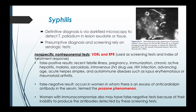When using non-specific non-treponemal tests, false positive results may occur in patients with recent febrile illness, pregnancy, immunization, chronic active hepatitis, malaria, sarcoidosis, IV drug use, HIV infection, advancing age, acute herpes simplex, and autoimmune diseases such as SLE or rheumatoid arthritis. False negative results commonly occur among women with an excess of anticardiolipin lipid antibody in the serum — what we call the prozone phenomenon. Women who are immunocompromised may also have false negative tests because of their inability to produce the antibodies detected by the screening test.